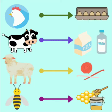Children, can you tell how animals are useful to us? Yes, animals give us many things. They do a lot for us to make our life better. Can you see in the picture what all things we get from animals? We get eggs from hens and ducks. We get milk from cows, goats, buffaloes, and camels. We get wool from sheep and we get honey from honeybees.